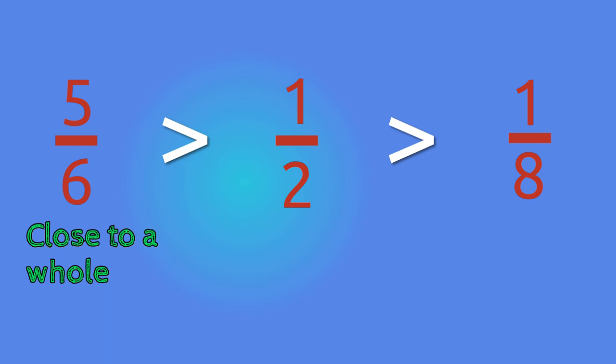Since 5 sixth is greater than 1 half and is very close to a whole, and 1 eighth is less than 1 half, we can see that 5 sixth has a greater value.